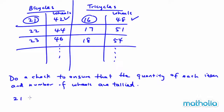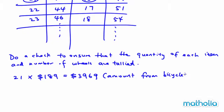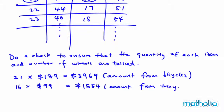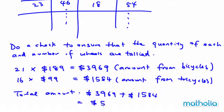Now I need to find the cost. If I have 21 bicycles at $189, I will have $3,969 from bicycles. 16 multiplied by $99 gives $1,584 from tricycles. Then I can find the total amount: 3969 plus 1584 gives a total of $5,553.